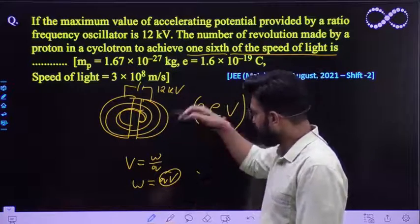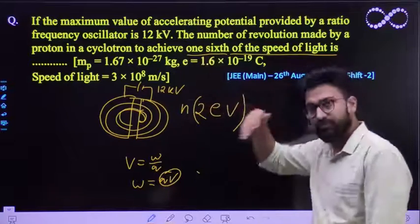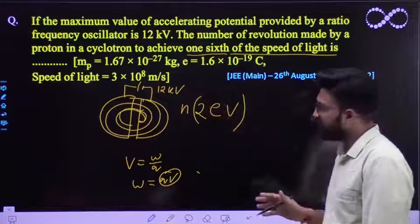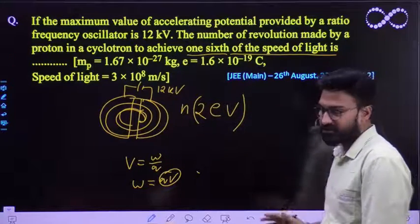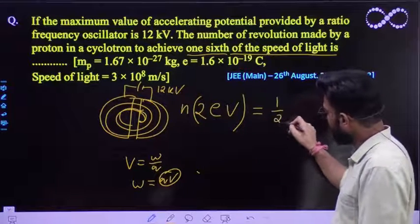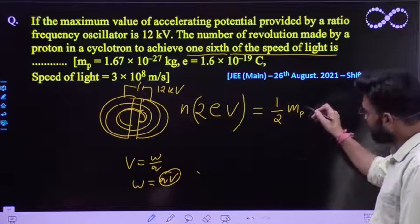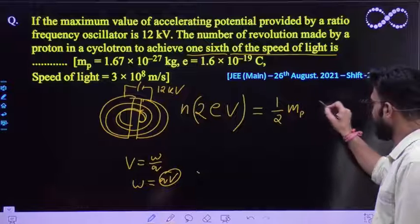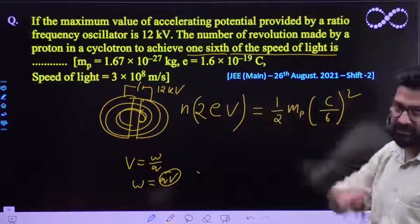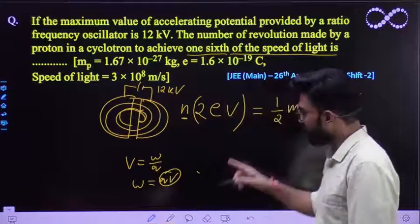Suppose n number of revolutions has taken place in order to achieve the speed of light to be one sixth. So this is the total work done that has to be given to the charge body in order to gain the kinetic energy in which the speed of this particle is one sixth of the speed of light. So this is the expression that you need to solve, and n that need to solve from this equation.